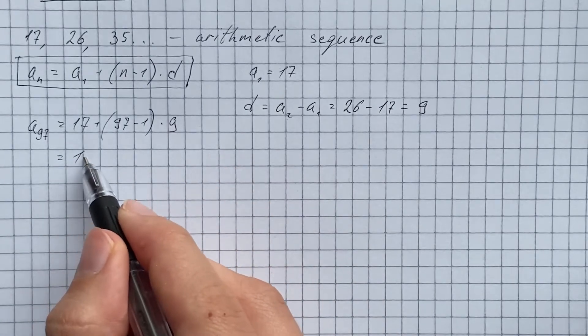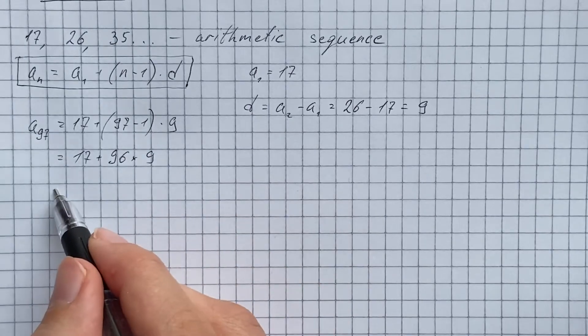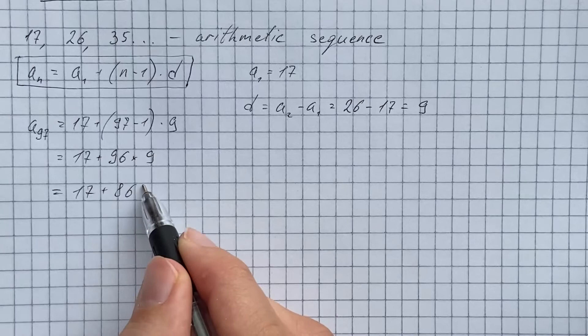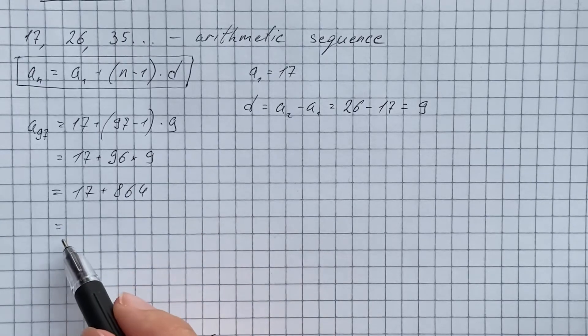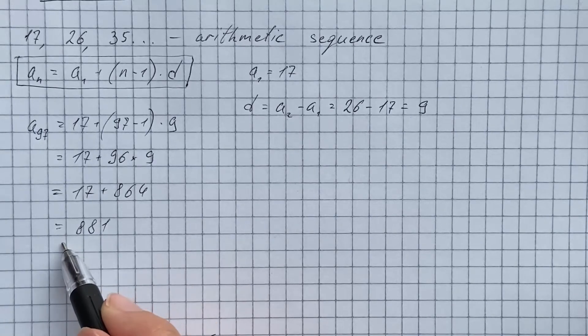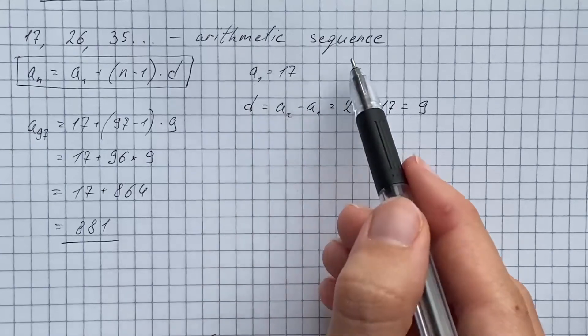So that's going to be 17 plus 96 times 9. Therefore we get 17 plus 864, and the final answer is 881. So that's the 97th term of the given arithmetic sequence.